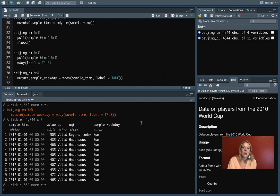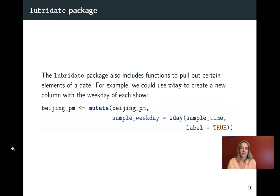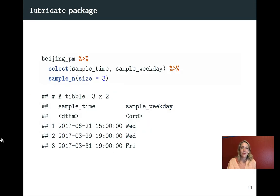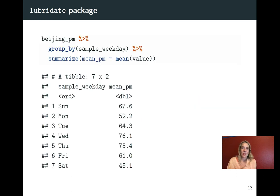As a note, this is coming out, the output from this is a factor, but it's a special type of factor called an ordered factor. You can see that's called ORD. So in this case, R is recognizing that Sunday should always come before a Monday, and Monday always comes before Tuesday and so on.